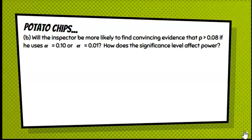So will the inspector be more likely to find convincing evidence that the proportion is greater than 8% if he uses alpha of 10% or an alpha of 1%? And how does this affect power? Well, what you have to do is remember what alpha represents. That's an area under the curve. So if I have a 10% area, how does that compare to a 1% area? Well, a 10% area is much larger than a 1% area. So that means I have a better chance of rejecting the null if it's 10% than I do if it's just a 1%.